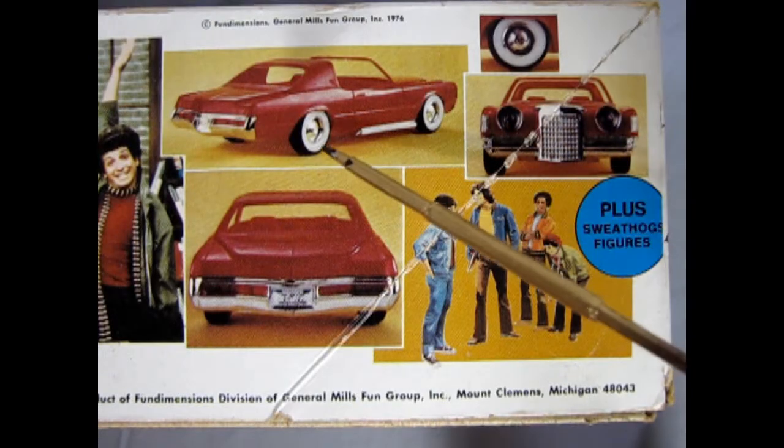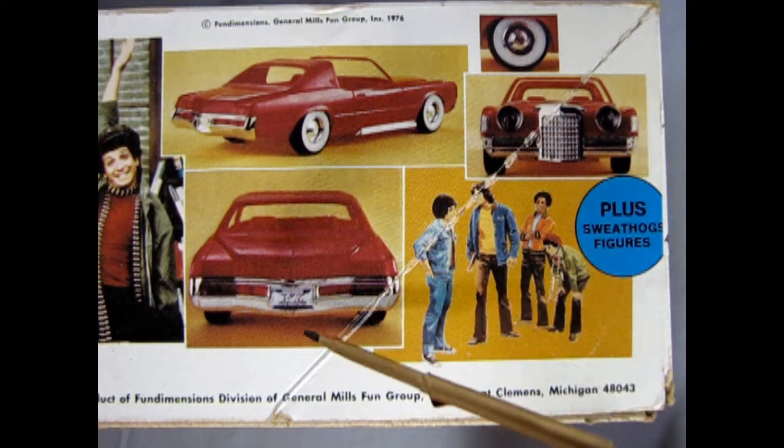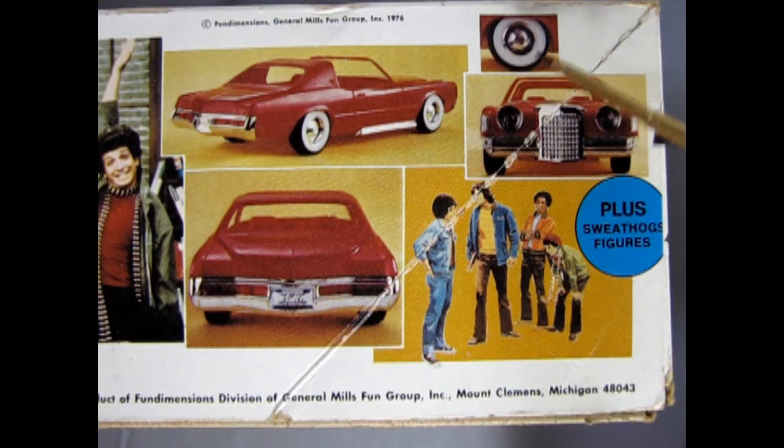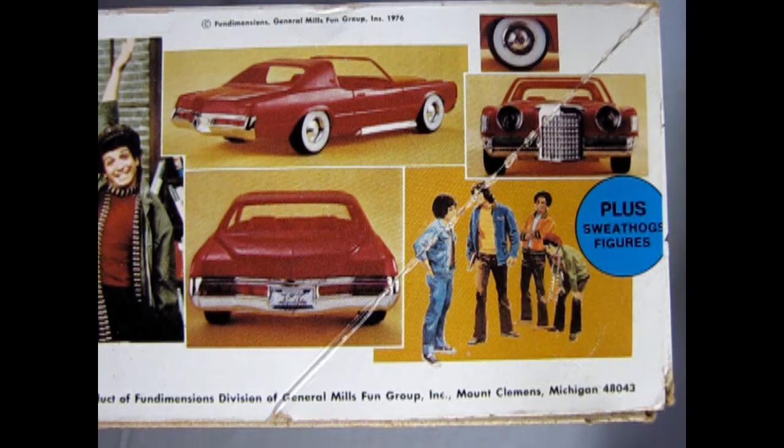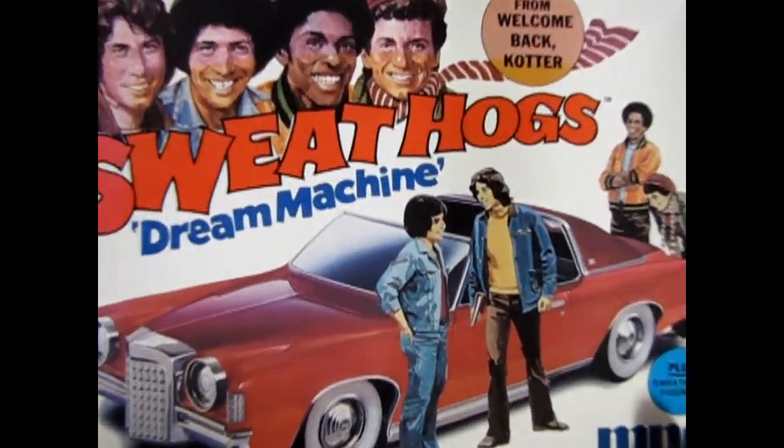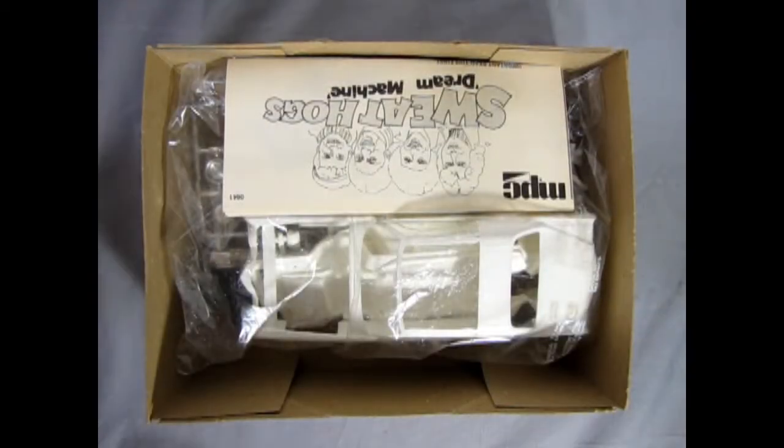And here we have the three-quarter rear shot of the car as well as the back end, front end, your white wall tires, and the four Sweathogs. And now let's take the lid off this box and check out the Sweathogs Dream Machine.